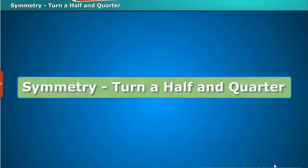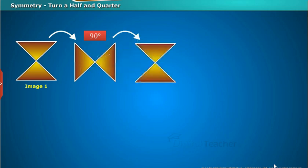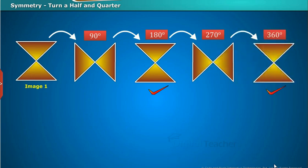Now we will see the symmetry of turning into half and quarter. Observe the figures shown. If the first image is rotated 90 degrees, it is not symmetry. If rotated further to 180 degrees, it is rotational symmetry. At 270 degrees it is not, but at 360 degrees it is symmetrical again. So this image has rotational symmetry at 180 degrees and 360 degrees.